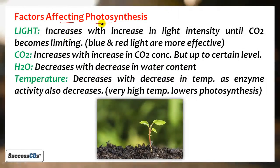Now the factors that affect photosynthesis. First we have light. Obviously light is required for photosynthesis. It increases with increase in light intensity until CO2 becomes limited. If light intensity increases, photosynthesis rate increases, but only as long as CO2 is present. If CO2 concentration is low, photosynthesis rate will be low regardless of light. In the visible region, blue and red regions are most effective for photosynthesis.